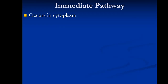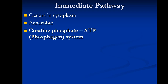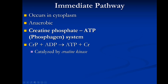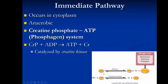The immediate pathway occurs in the cytoplasm of cells and is anaerobic. The bulk of it involves the creatine phosphate reaction: a molecule called creatine phosphate, found in tissues including muscle, can donate its phosphate to ADP to reform ATP — leaving creatine by itself without the phosphate. The enzyme catalyzing this reaction is called creatine kinase. This serves as a very quick backup system to rapidly replenish ATP.